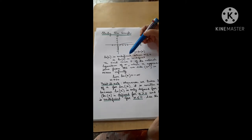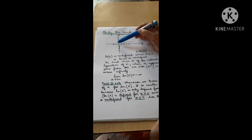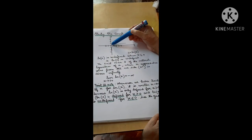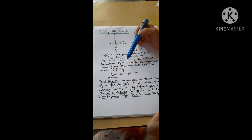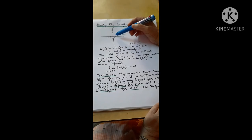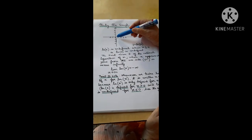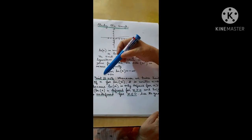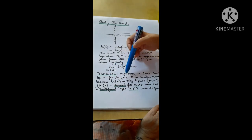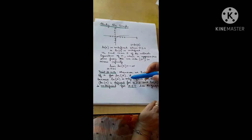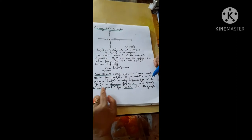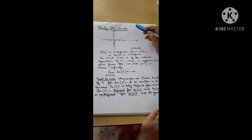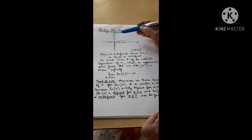Study the graph y = ln x. ln x is undefined when x ≤ 0. ln(0) is undefined. The limit of ln x as x approaches 0 from the positive side is minus infinity. Whenever we take the limit of ln x near 0, it is written as x approaching 0⁺, because ln x is only defined for x greater than 0.